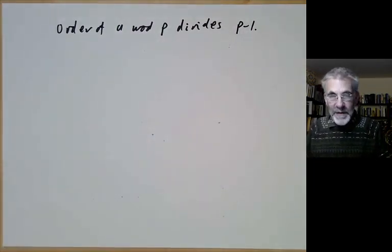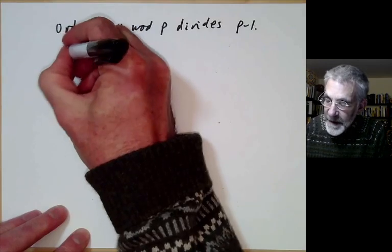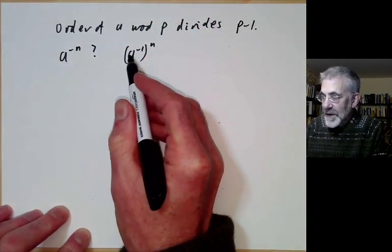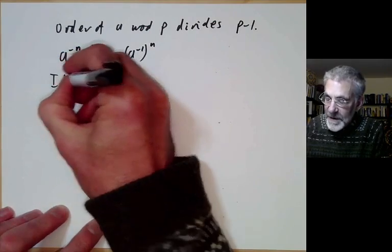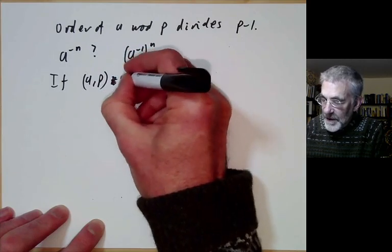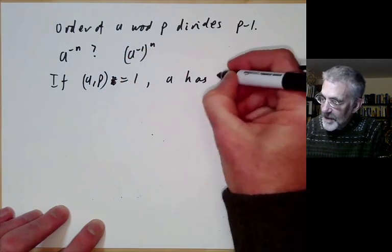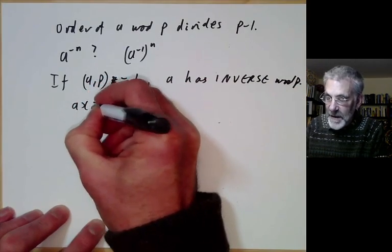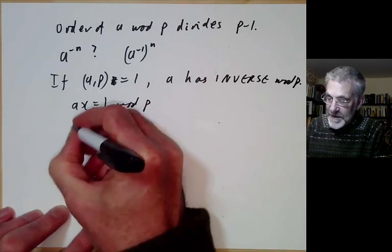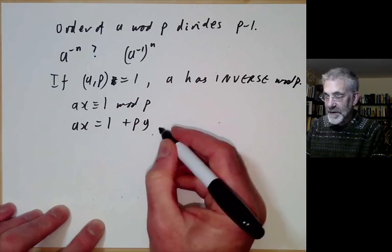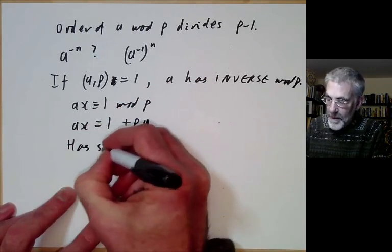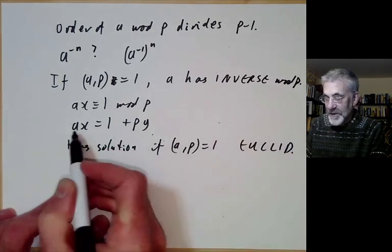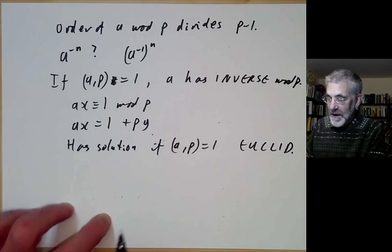Before proving that, I'll point out that we can also define negative powers of a. What is a to the minus n? That's just a to the minus 1 to the n. We need to know when we can form the inverse of a. If a and p are co-prime, then a has an inverse modulo p. We're solving a·x ≡ 1 mod p, which says a·x equals 1 plus p·y for some x and y. This has a solution if a and p are co-prime by Euclid's algorithm.